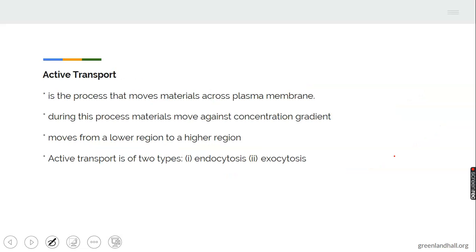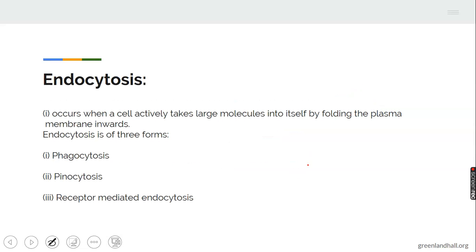Active transport is another method by which substances move in and out of the cell. Active transport is the process that moves materials across the plasma membrane from a region of lower concentration to a region of higher concentration. There are two types of active transport: endocytosis and exocytosis.